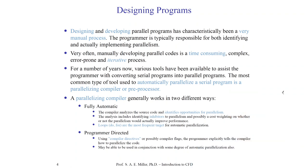A parallelizing compiler — that is, the compiler that takes the source code and creates object codes and assembles it into an executable — can be categorized in two ways. One is fully automatic, in that it will try and parallelize the code automatically using its own directives. I don't really recommend this for someone new to parallel computing, because if you really want to understand it, you'll have to go down to the level of the source code and parallelize it using compiler directives and calling libraries for parallelism.